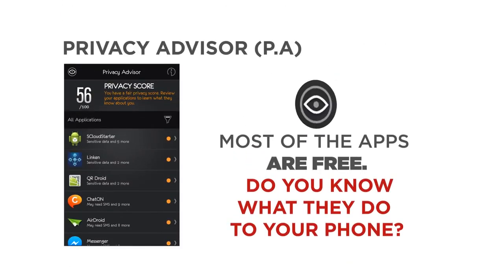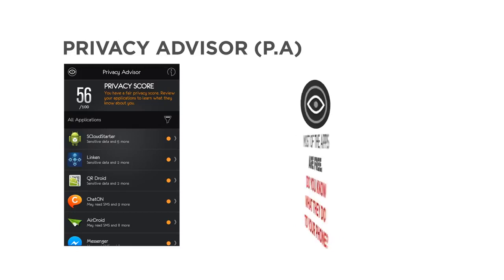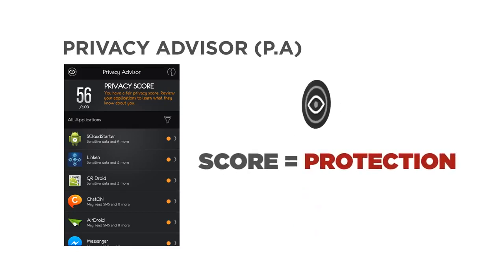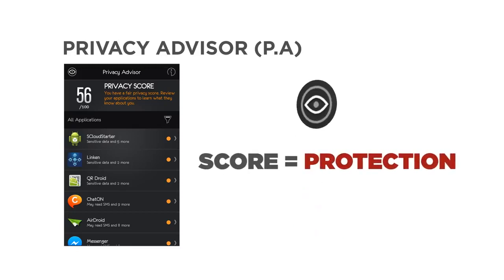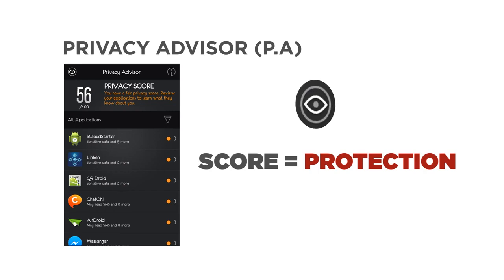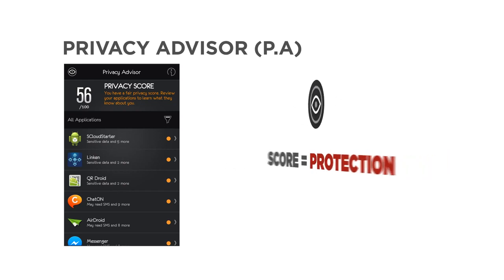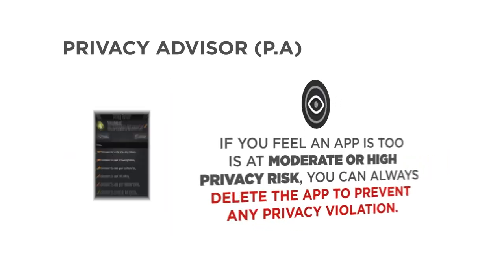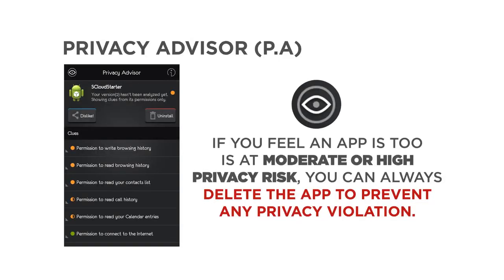The privacy advisor is the next big step in getting privacy, as you will also be able to know what is permitted to be used in the app. The higher you score, the more secure you are. Be aware of the terms and conditions that are usually ignored, to know if there are any apps that try to send messages from your phone anonymously.